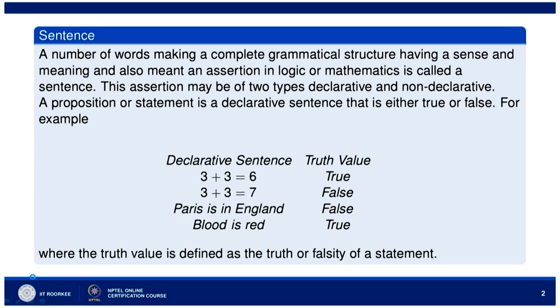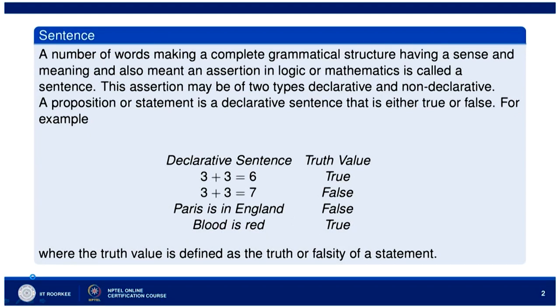This assertion may be of two types: declarative and non-declarative. A proposition or statement is a declarative sentence that is either true or false. For example, 3 plus 3 equal to 6 is a declarative sentence and its truth value is true. Then 3 plus 3 equal to 7 is a declarative sentence but its truth value is false. 'Paris is in England' has truth value false; 'blood is red' has truth value true. So the truth value is defined as the truth or falsity of a statement.